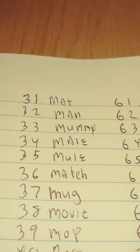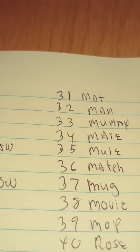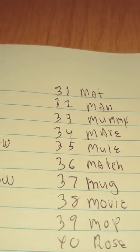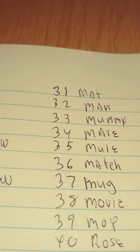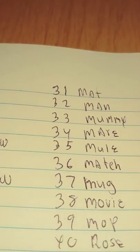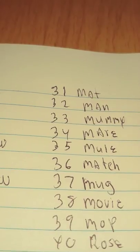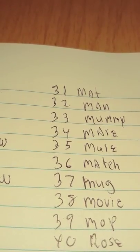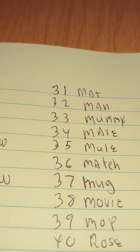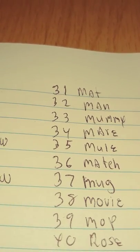Coming up here, 31 is mat, 32 is man, 33 is mommy, 34 is mule - mirror like a horse, mule. 35 is match, the T is silent. 36 is mug, 37 is mug.